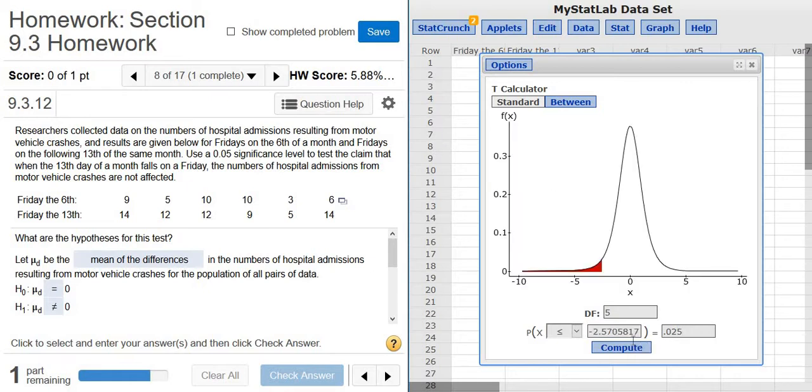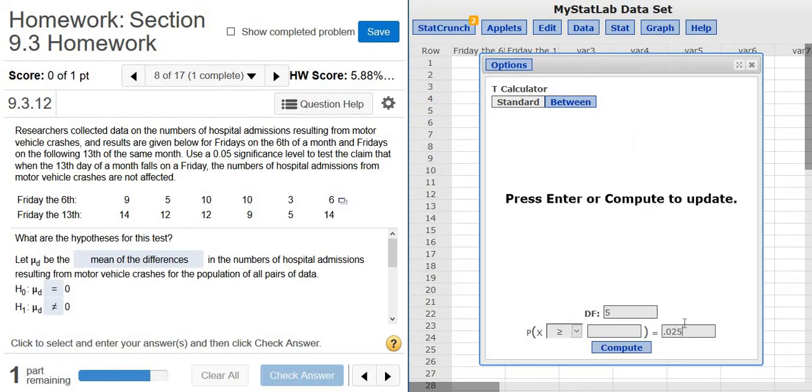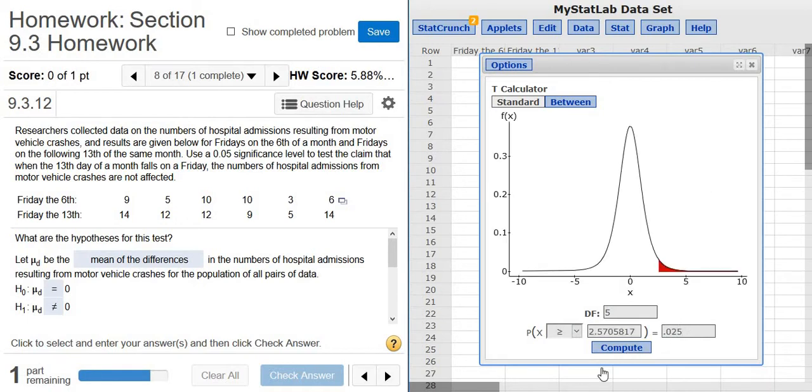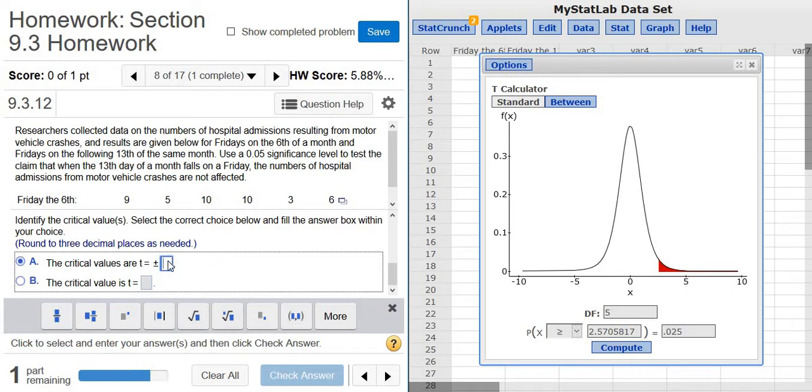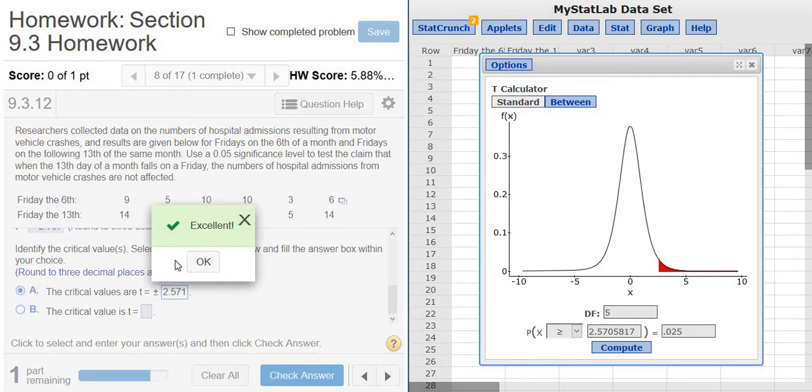You click Compute, and that's one of your critical values. The other one is the positive one. If you find the other one, you can just change this to greater than, and then do 0.025. Same thing, right? So it's plus or minus 2.571. Good stuff.